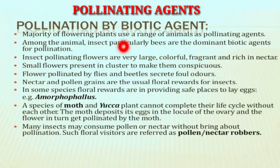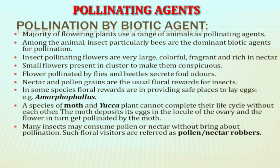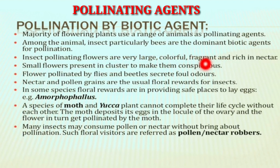Next, pollination by biotic agents. Major flowering plants use animals as pollinating agents. Among animals, insects especially act as pollinating biotic agents. Insect-pollinated flowers are very large in size, colorful, and release fragrance and are rich in nectar, so that insects can easily pollinate them.